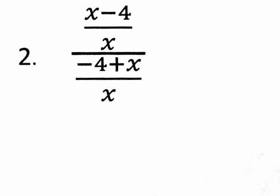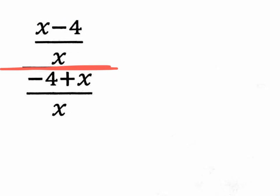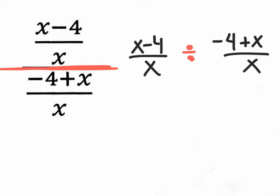It does get a little more challenging. Let's take a look at this next one. We need to recognize that here is the big division bar, so we really have the above fraction divided by the below fraction. Let's make it look nicer by writing it horizontally instead of vertically. I want to write this fraction divided by this fraction, but sideways — the top one divided by the bottom one.